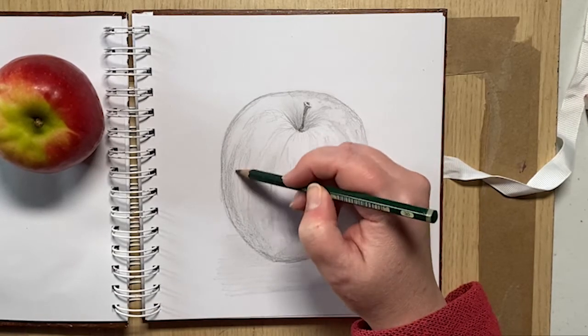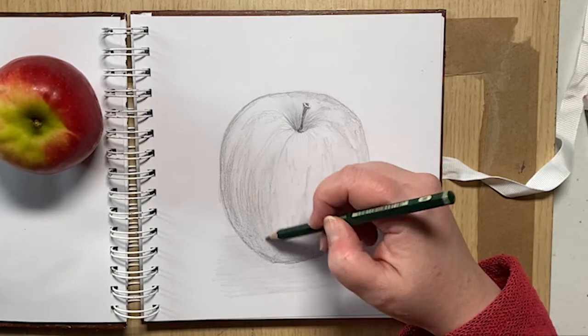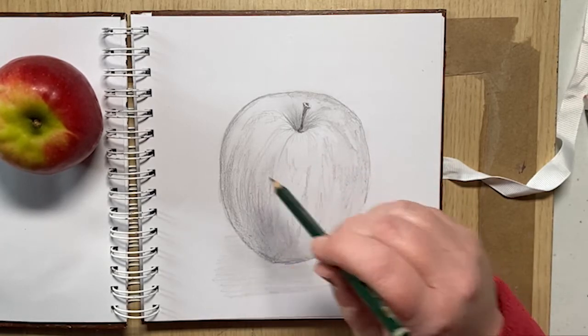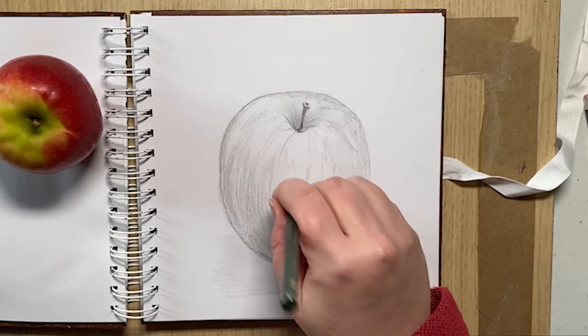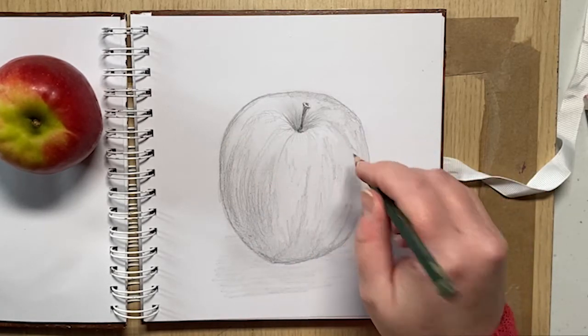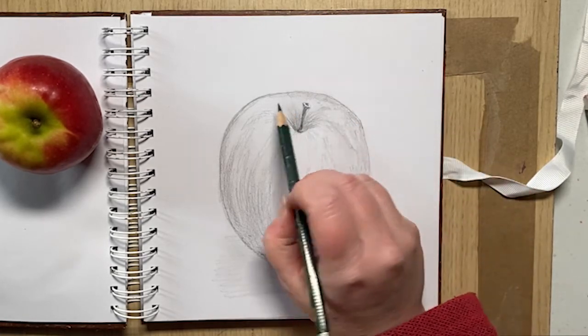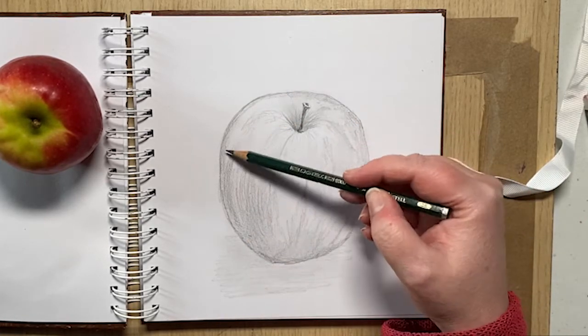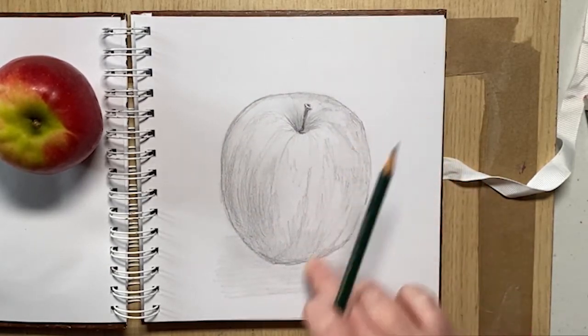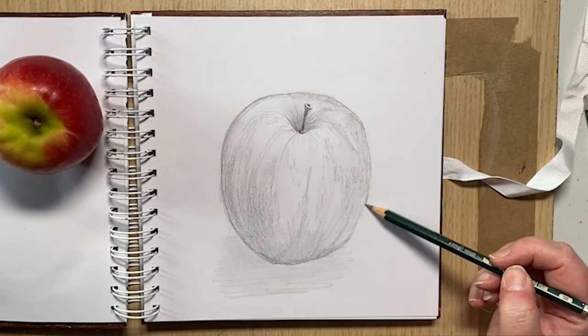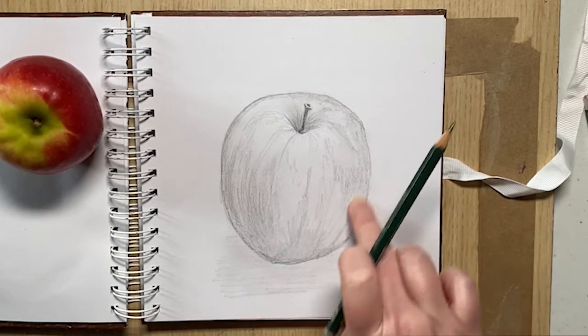So if you see the markings, my particular apple has got quite a lot of dots and lines. A little bit of a bruise on my one as well, so I'll just put a little bit of a dink there.